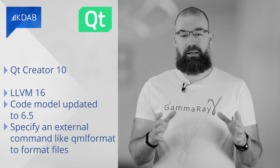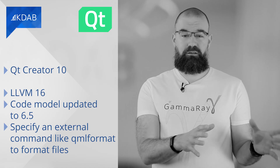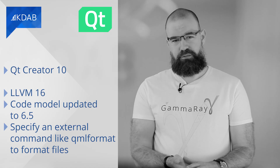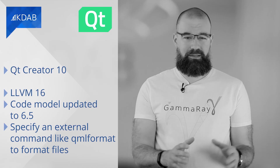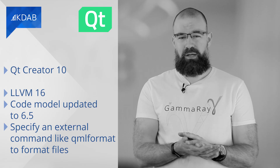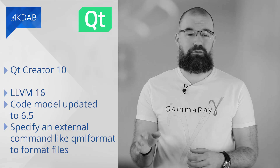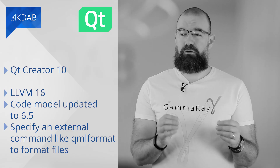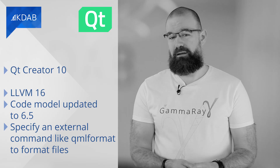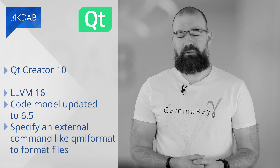Right after our last news edition, the latest version of Qt Creator came out. Most important updates in Qt Creator 10: it now ships with LLVM 16, which improves C++20 support in Clang and the interaction between Qt Creator and ClangD. Also, the code model is updated to 6.5, so the editor now shows a color preview for all corresponding properties as a tooltip, and you can specify an external command like QML Format to format files instead of the built-in formatter.